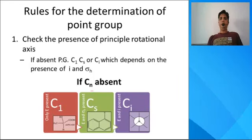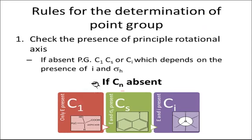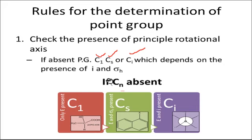Initially, for determining the point group, first you have to check the presence of the principal axis of rotation. If the principal axis of rotation is absent, then there may be possibility of these three point groups: C1, Cs, or Ci, depending on the presence of center of symmetry and the horizontal plane of symmetry.